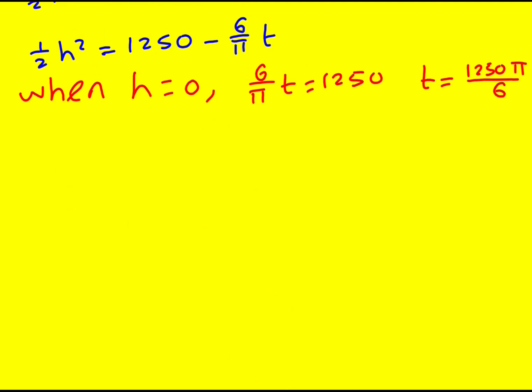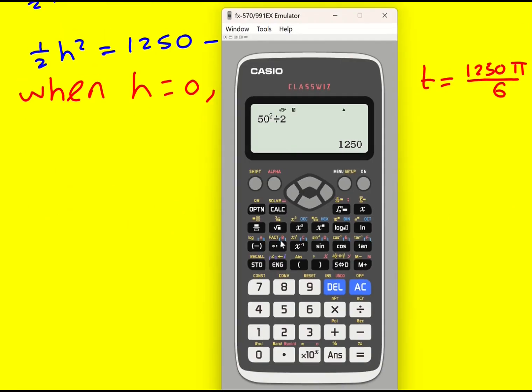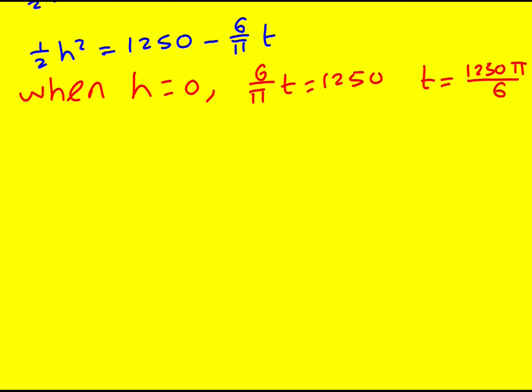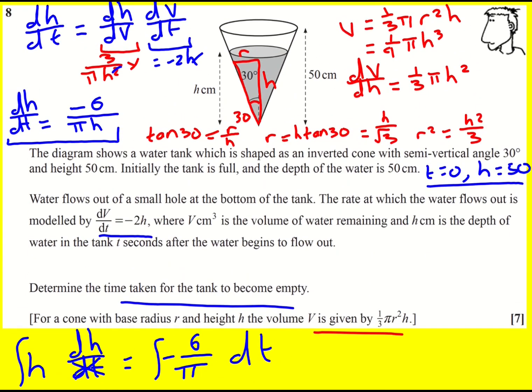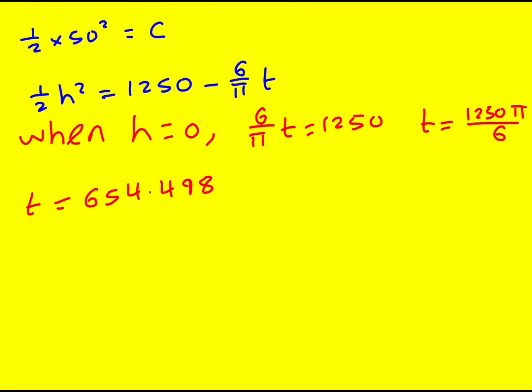But this is like a modeling question. So let's write it down to three significant figures. So 1250 times pi over 6. And it's going to take 654.498. And that was seconds, I believe. Does it say anywhere? T seconds. It doesn't ask us to write it in minutes or anything. So I wouldn't worry about that. Just round it to the nearest whole number. 654 seconds. Nice one.